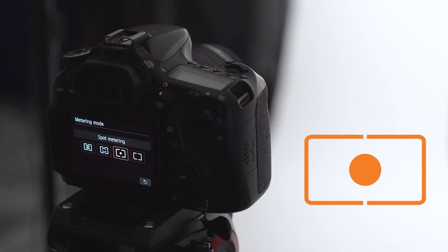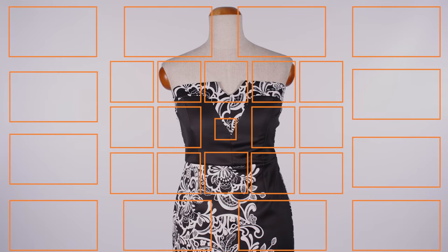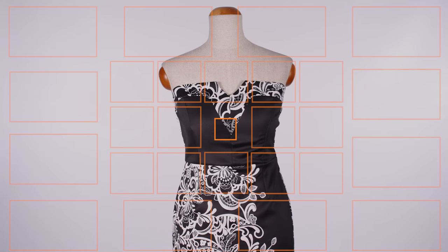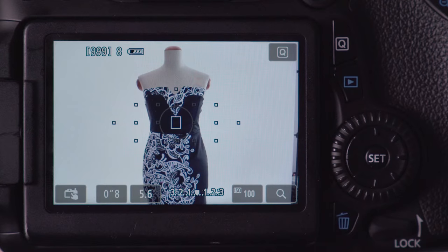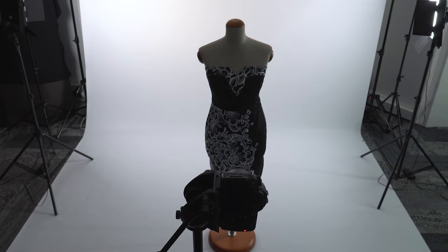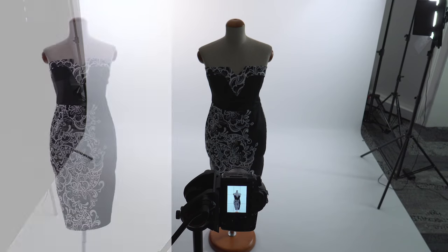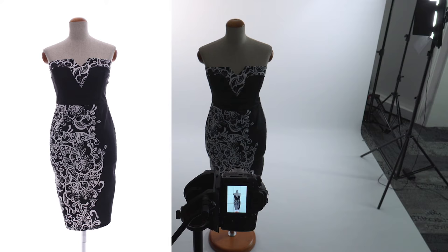Spot metering reads light from a small specific area of the scene. When using spot metering, only 5% of the light in the scene will be measured. Spot meter readings can be taken from the point where you focus your camera. Spot metering is very effective in high contrast scenes, where you want to ensure a specific area of the subject is correctly exposed.